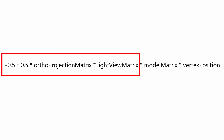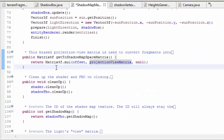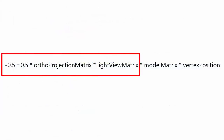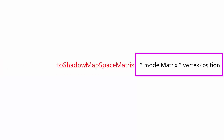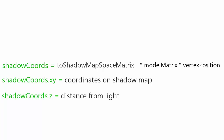This part of the transformation is provided as a matrix in the shadow map master renderer class. You can see that it returns the light's view matrix multiplied by the orthographic projection matrix with that conversion offset already applied. So all we need to do in the terrain shader is multiply that matrix with the terrain's model matrix and vertex position. Once done, we'll have the shadow map coordinates in X and Y, and in Z we'll have the depth value of the vertex relative to the light — basically the distance of that terrain vertex from the light source.